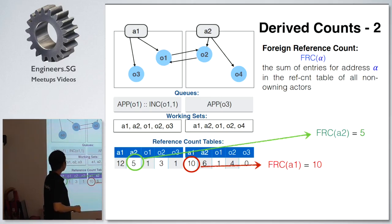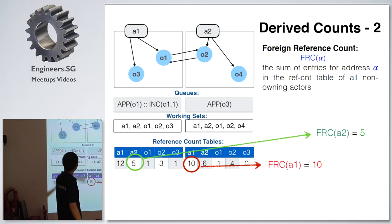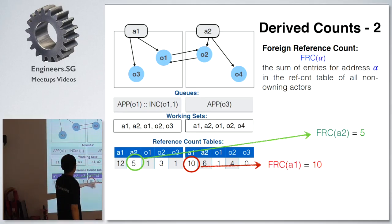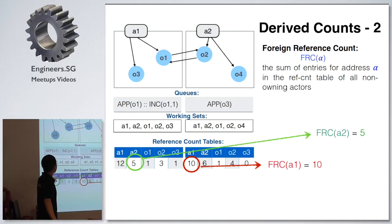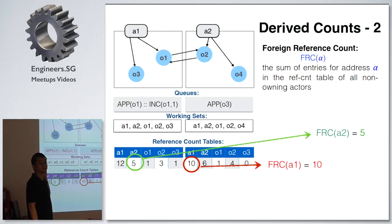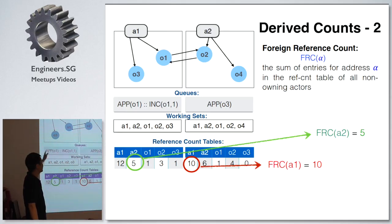The foreign reference count is the inverse — all the counts from non-owners of the actor. The foreign reference count of A2 is just A1's value, since there's only one other actor. If there were more actors, you'd add up the A2 values in all actors except A2 itself.